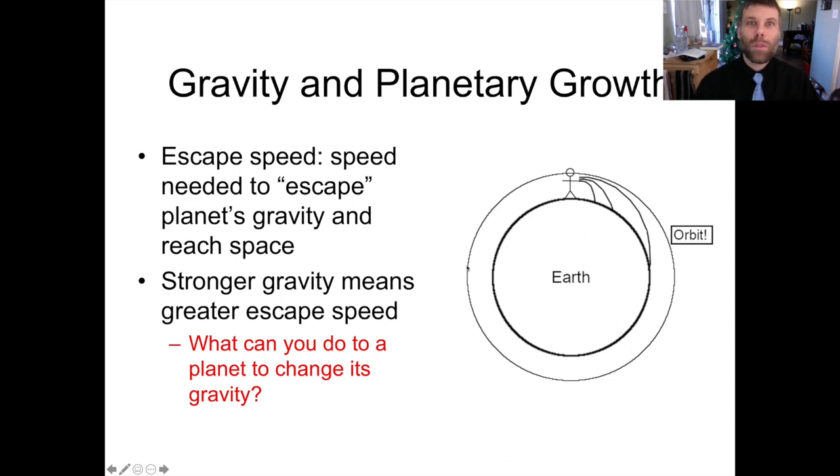So there's some minimum speed that you need in order to escape from the Earth's gravity and reach orbit. And that's what we call the escape speed. Every planet and every massive body has its own escape speed that differs depending on the strength of gravity of that source. So stronger gravity means a greater escape speed.